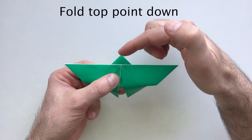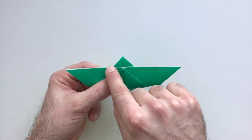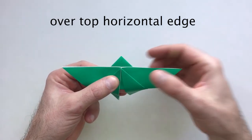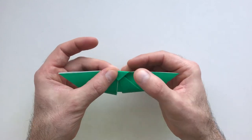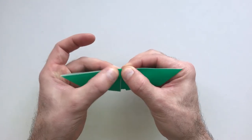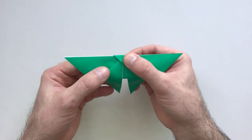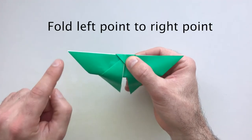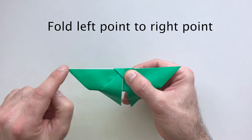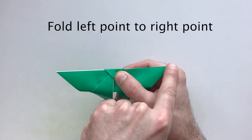Now fold the top point down over this horizontal edge and crease. Then fold this left point to the right point.